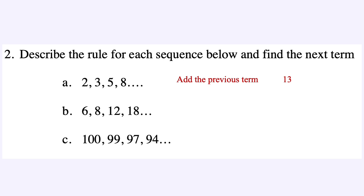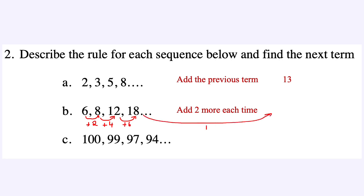For Q2B, we have 6, 8, 12, 18. From 6 to 8 we added 2, from 8 to 12 we added 4, from 12 to 18 we added 6 — we're adding 2 more each time. So the next difference would be plus 8, which means 18 plus 8 gives us the next term of 26.